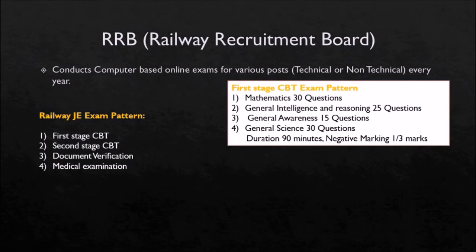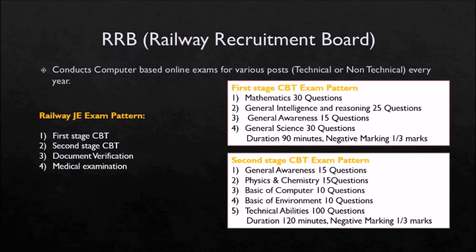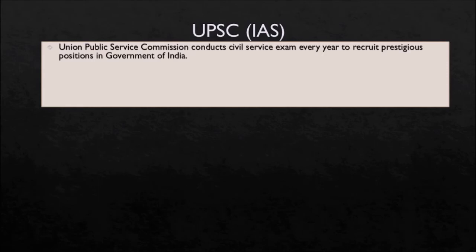Second Stage CBT covers general awareness (15 questions), physics and chemistry (15 questions), basic computer (10 questions), basic environment (10 questions), and technical abilities (100 questions) — 150 questions total in 120 minutes, with one-third negative marking. After qualifying both stages, candidates proceed to document verification and medical examination.